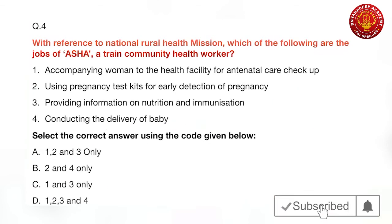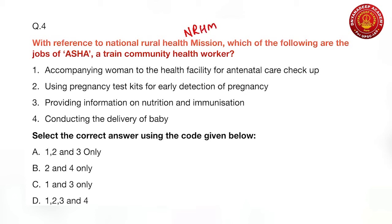The fourth question is about ASHA under the National Rural Health Mission (NRHM). ASHA stands for Accredited Social Health Activist — a trained community health worker. The options for ASHA's jobs are: accompanying women to health facilities for antenatal care checkups; using pregnancy test kits for early detection of pregnancy; providing information on nutrition and immunization; and conducting delivery of a baby. The fourth option — conducting delivery — is not the work of ASHA. Only the first three statements are correct.